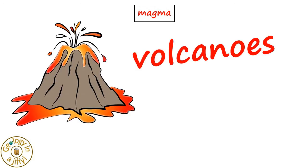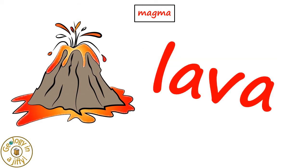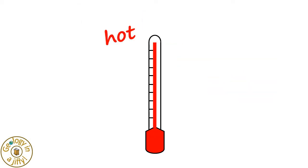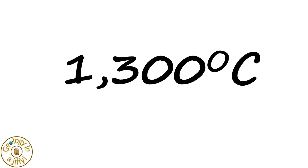Magma can leak out of the mantle, through the crust, at volcanoes — when we then call the magma lava. Lava can be very hot, sometimes around 1300 degrees C. Yes, 1300 degrees C.